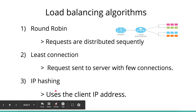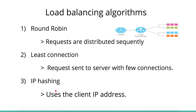The third algorithm is IP hashing. The load balancer uses the client's IP address to determine which server to send the request to. For example, IP ranges A to B go to server one, C to D go to server two, and E to F go to server three. Based on the client's IP address, the algorithm decides how to distribute the traffic.